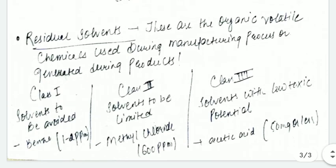The last type is residual solvents. These are solvents we use when we're manufacturing or generating products. These solvents are divided into Class 1, Class 2, and Class 3.